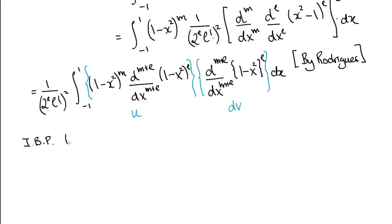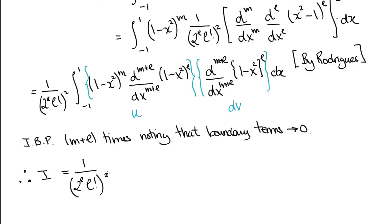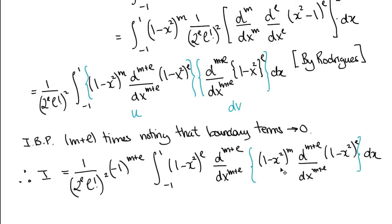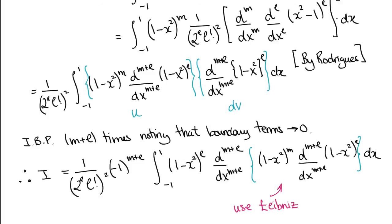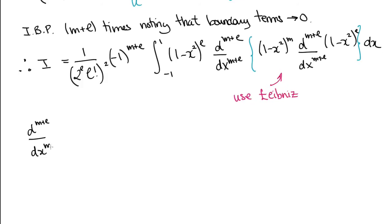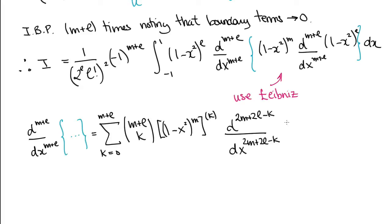So we integrate by parts M plus L times. And luckily, because the 1 minus X squared factor, the boundary terms are always 0. The integral I is now this expression that involves two M plus L derivatives nearly in succession. Let's now focus on the outermost M plus Lth derivative and apply Leibniz's theorem to the curly braces.